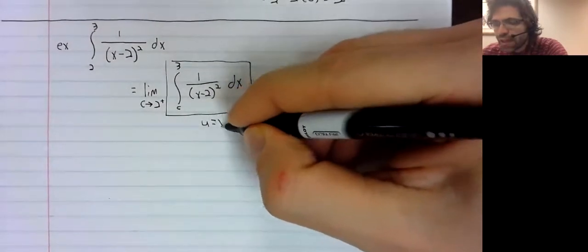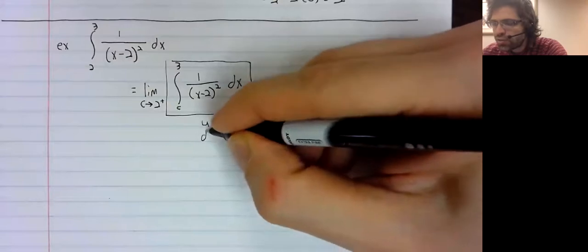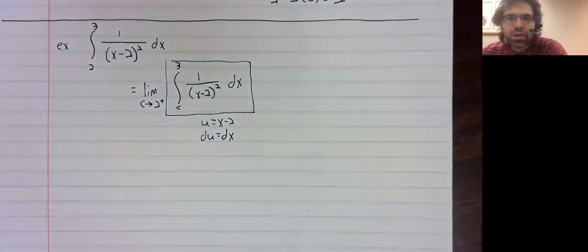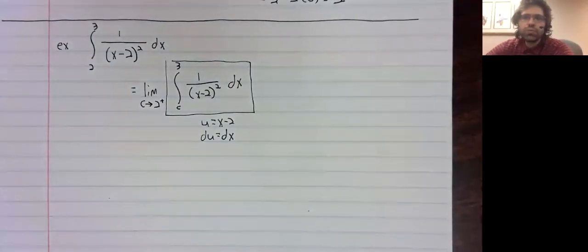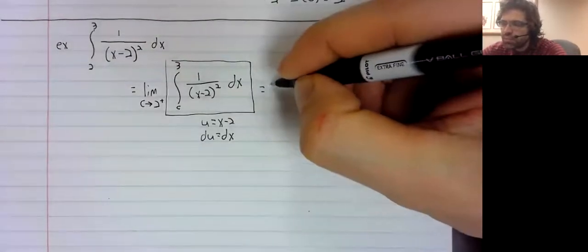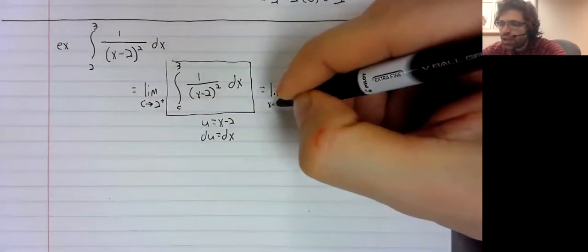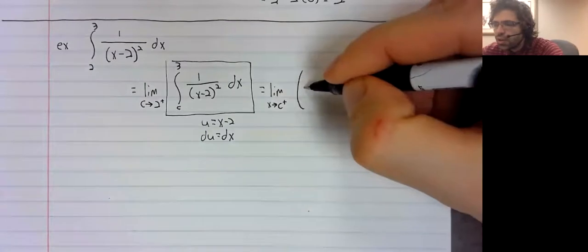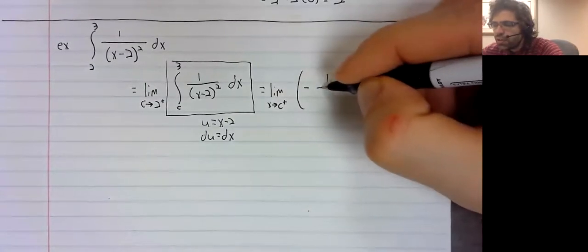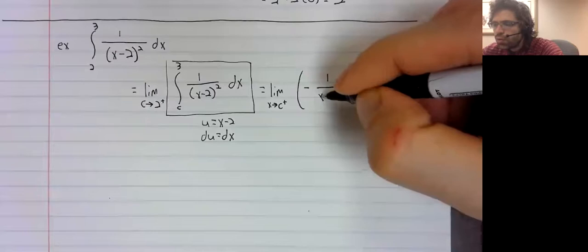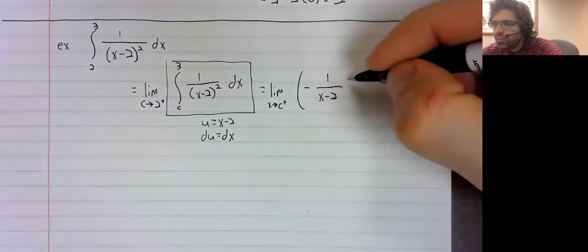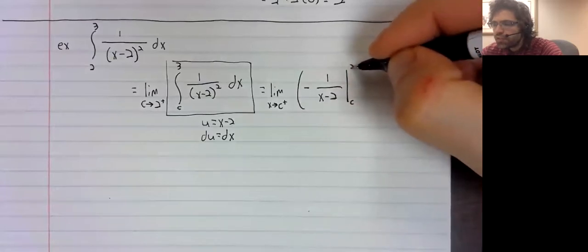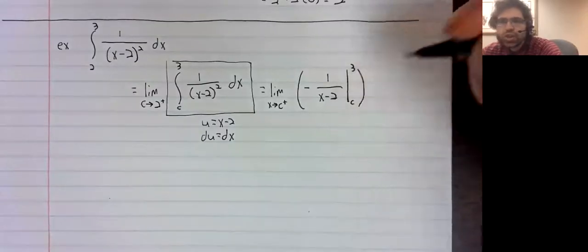Well, we can do that. I don't want to go through all the details, but it's a quick U substitution. And we're left with the limit as X approaches two of negative one over X minus two, evaluated from C to three.